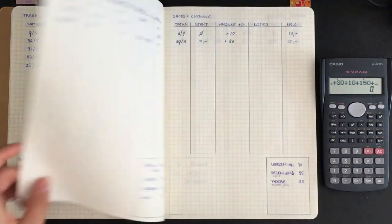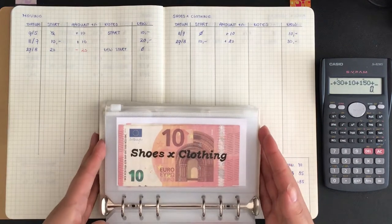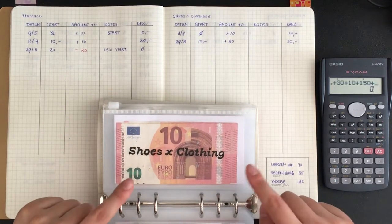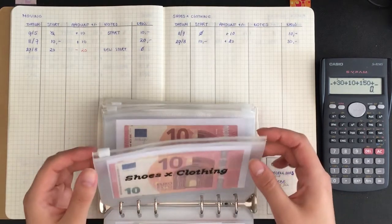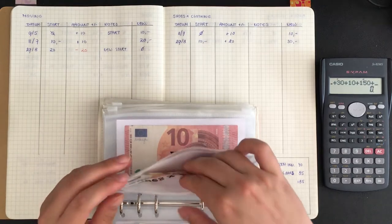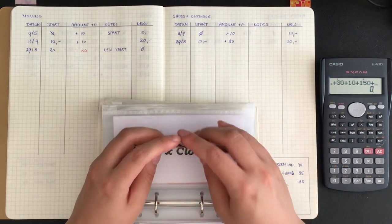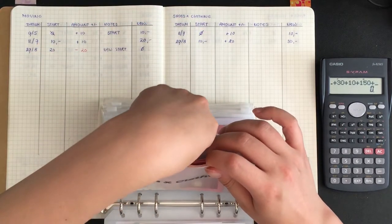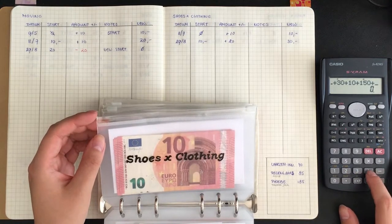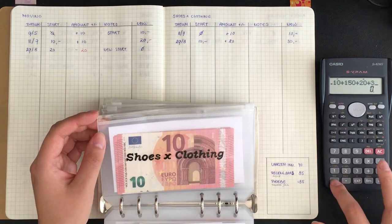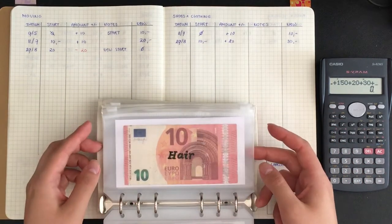So we are going to go one further. Moving has nothing because I decided that that one was not the priority for now. Then we have shoes and clothing which should have 30. We have 10, 20 and 30 in there. And I forgot the 20 from the house envelope and then the 30 from this one.